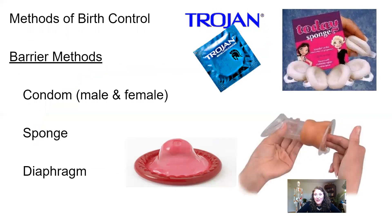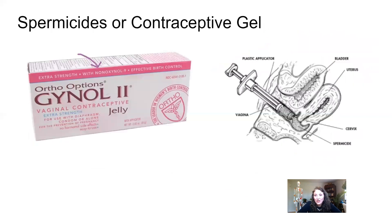Ways to prevent pregnancy: the most common barrier method is condoms, both male and female. Less common ones are sponges and diaphragms — all working as a barrier between sperm and eggs to prevent fertilization. There are also spermicidal gels that thicken the mucus level in the cervix so that any sperm ejaculated into the vagina won't be able to travel up into the uterus to fertilize the eggs.